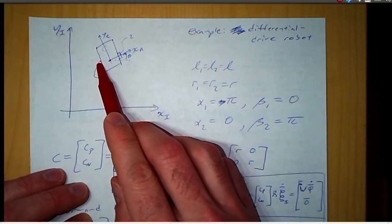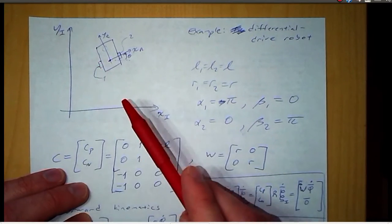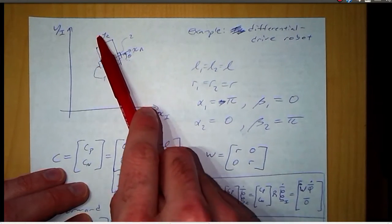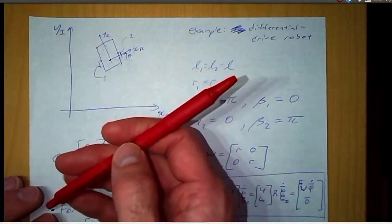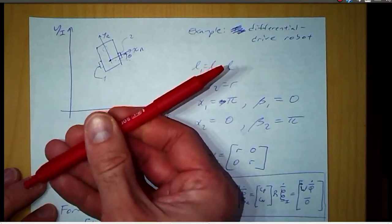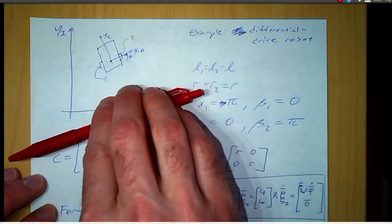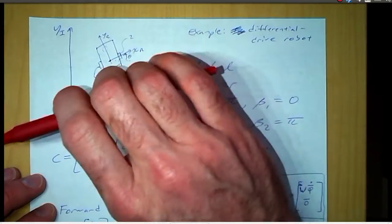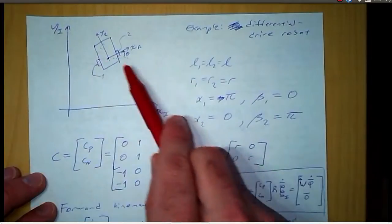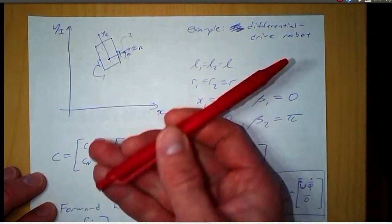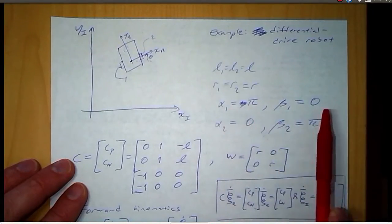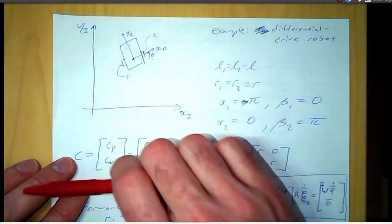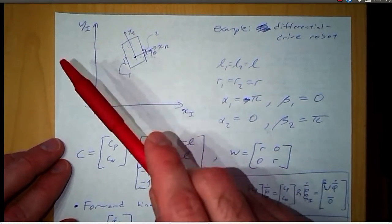Wheel one is on the negative x-axis, so alpha one is pi. A positive wheel rotation would move the robot origin in the positive robot y-direction. If we rotate by alpha equals pi, a positive wheel rotation for wheel one would go in this direction, meaning it would move the origin in the positive y-direction. So alpha one equals pi and beta one equals zero. When alpha one is zero, positive wheel rotation faces one way, but after rotating the wheel by pi, positive wheel rotation faces the other way — that's why alpha one is pi and beta one is zero.